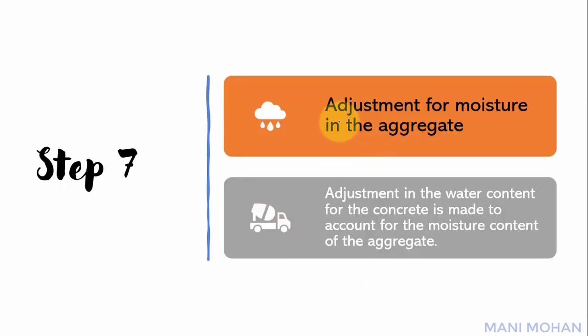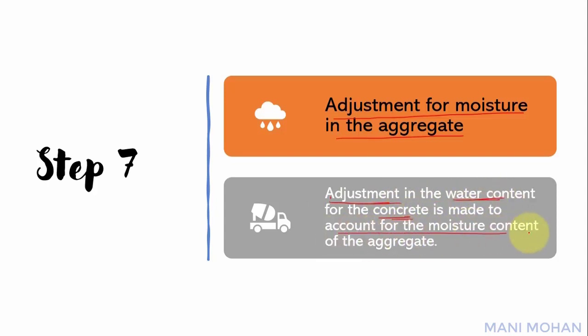Step 7: Adjustment for moisture in the aggregate — suitable adjustments in the water content for the concrete are made to account for the moisture content of the aggregate.